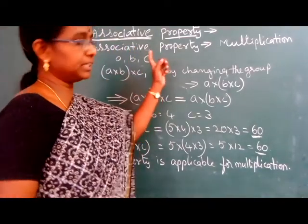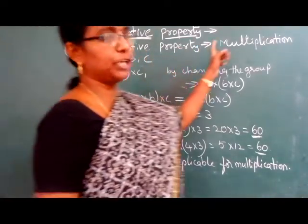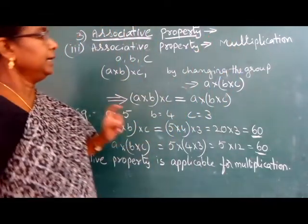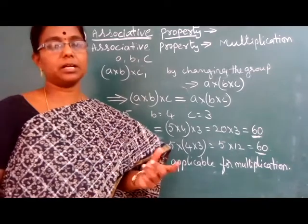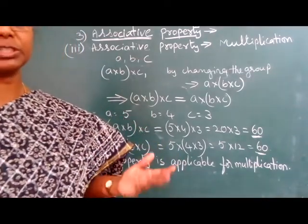In associative property, the third one, associative property on multiplication, it states that if you multiply three or more numbers...